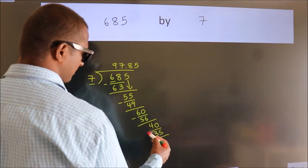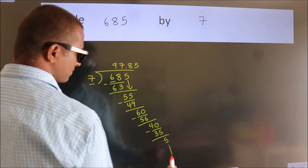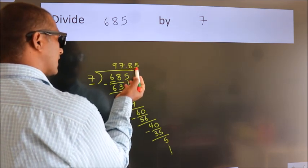Now we subtract. We get 5. And the division continues. It is enough if we do up to 2 decimal places.